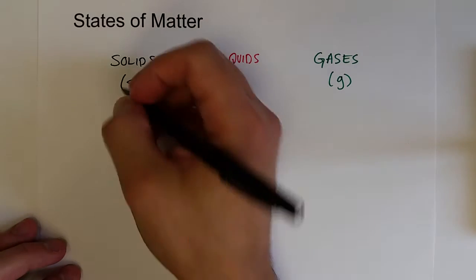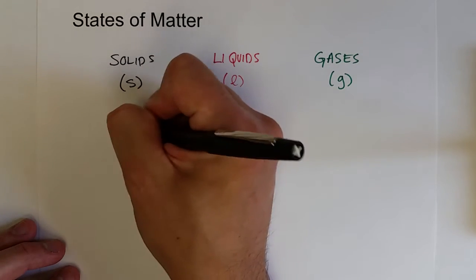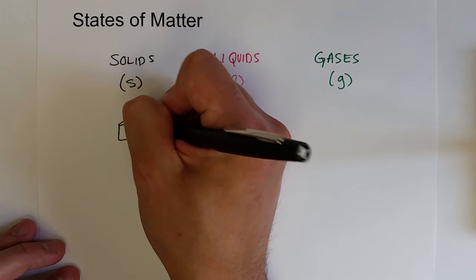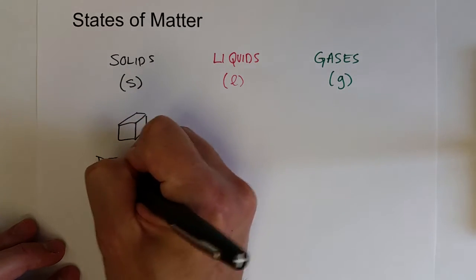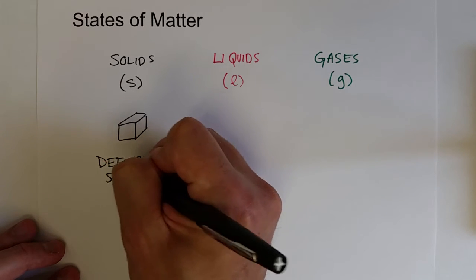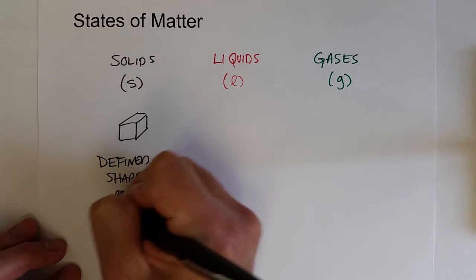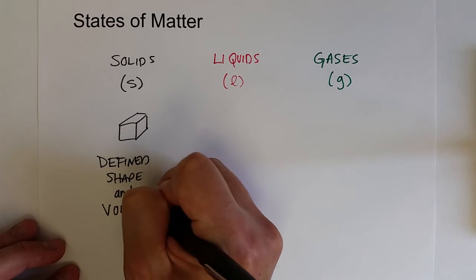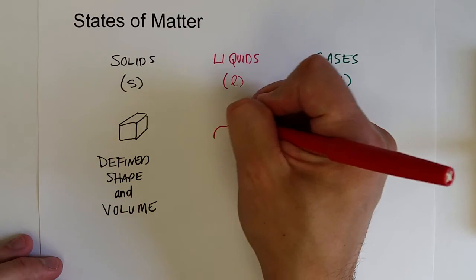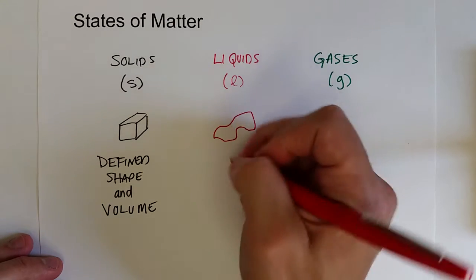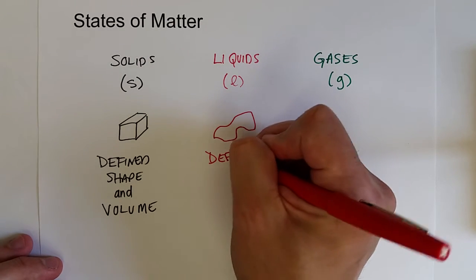Of course, solids have a defined shape and volume. Liquids have a defined volume, but don't have a defined shape.